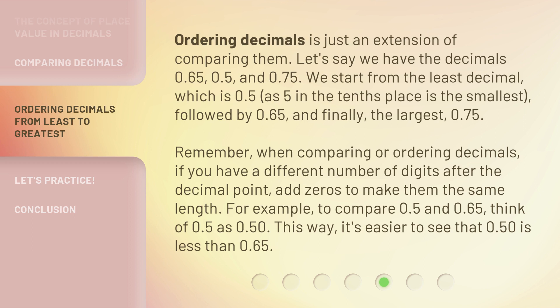Remember, when comparing or ordering decimals, if you have a different number of digits after the decimal point, add zeros to make them the same length. For example, to compare 0.5 and 0.65, think of 0.5 as 0.50. This way, it's easier to see that 0.50 is less than 0.65.